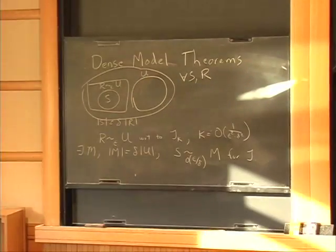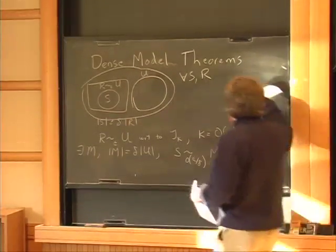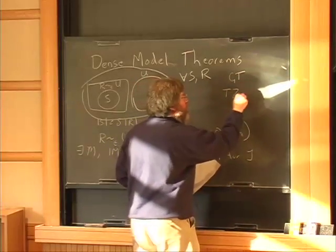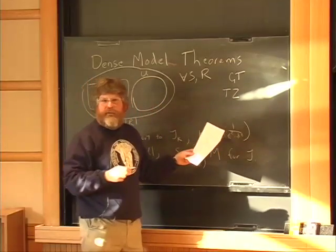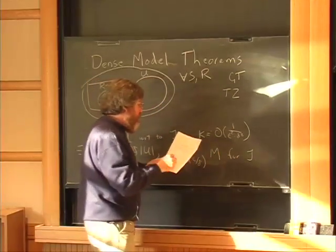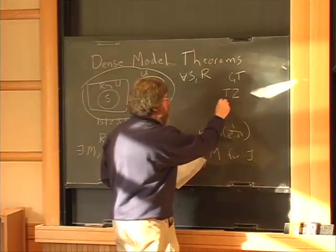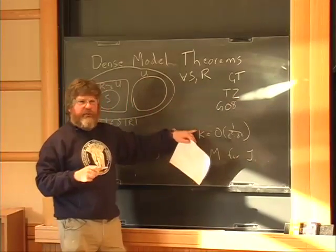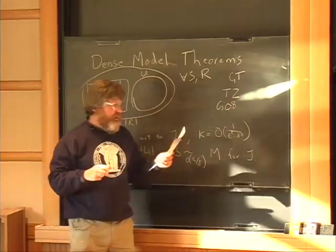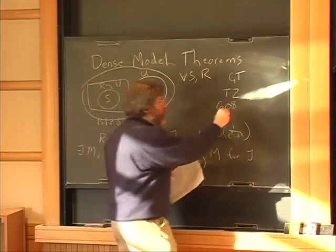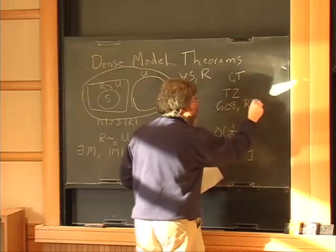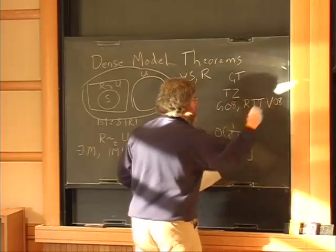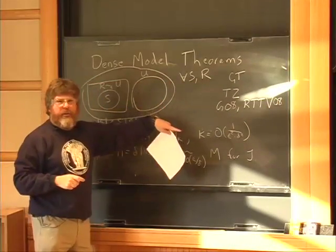Green and Tao were using some ideas like this implicitly. Tao and Ziegler did it explicitly in a sequel paper. Then Gowers got an improved version that pretty much matches these parameters, just this year. Also Reingold, Trevisan, Tulsiani, and Vadhan gave a proof.